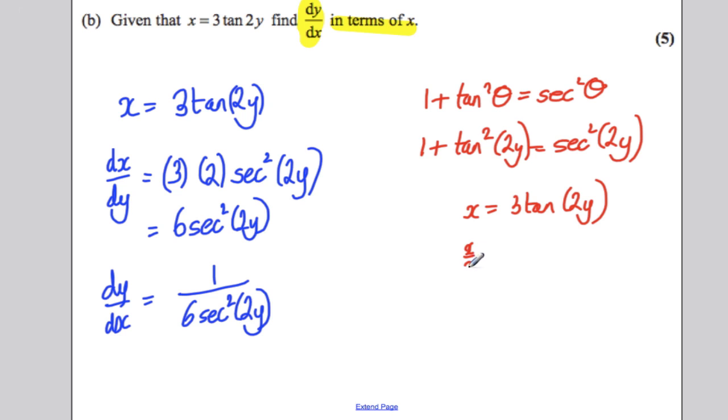So tan squared must be x squared over 9. So we could just substitute that in here. Therefore, using this, 1 plus x squared over 9 must equal sec squared 2y.